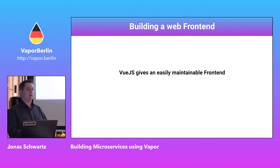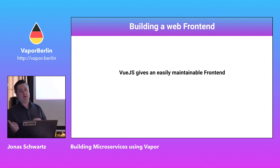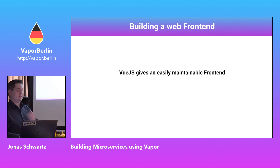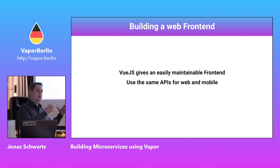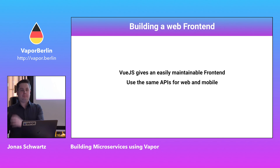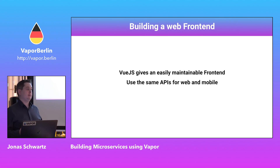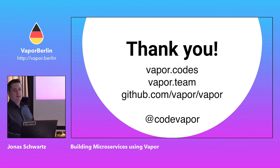Vue.js gives a nice framework for building your web frontend. It's what powers the Vapor Cloud 2 dashboard. They have components you can use or customize. The Vapor website is also powered by Vue.js. You can use the same API for web and mobile, so you don't need to build Leaf templates and separate API endpoints for your mobile app. If you need the same data available in both your website and app, this is a lot easier because everything connects to the same API endpoints with the same data.